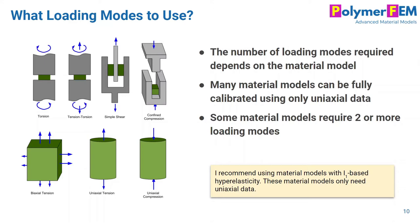How about loading modes? This is something many people don't think enough about. You should carefully consider what's best — tension test, torsion test — and how many of these to run. The number of different loading modes you need will depend on the material model you want to use. I typically recommend using I1-based hyperelastic models in your viscoelastic material model. If you use I1-based hyperelasticity as the base component, then only one loading mode is sufficient.